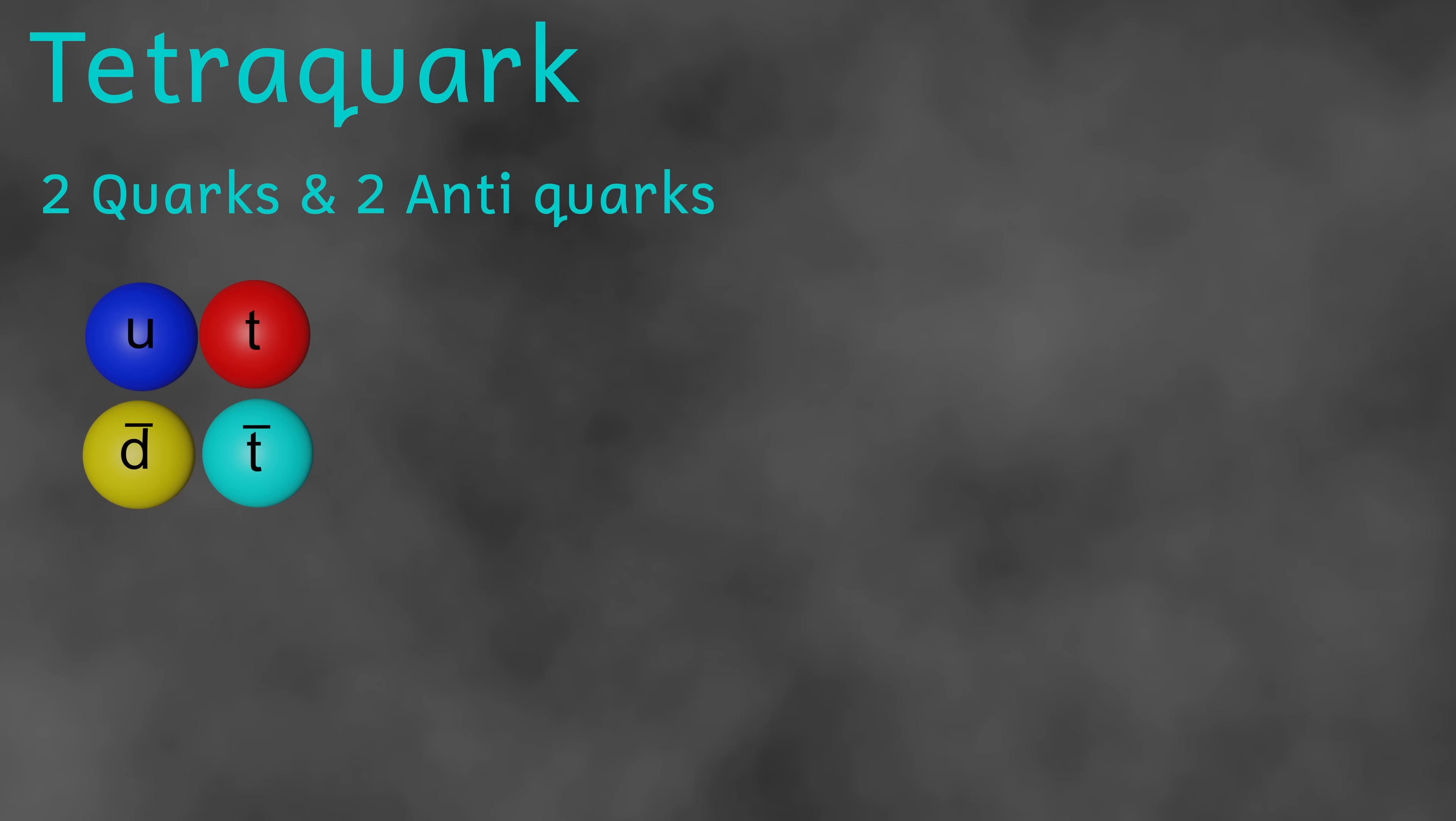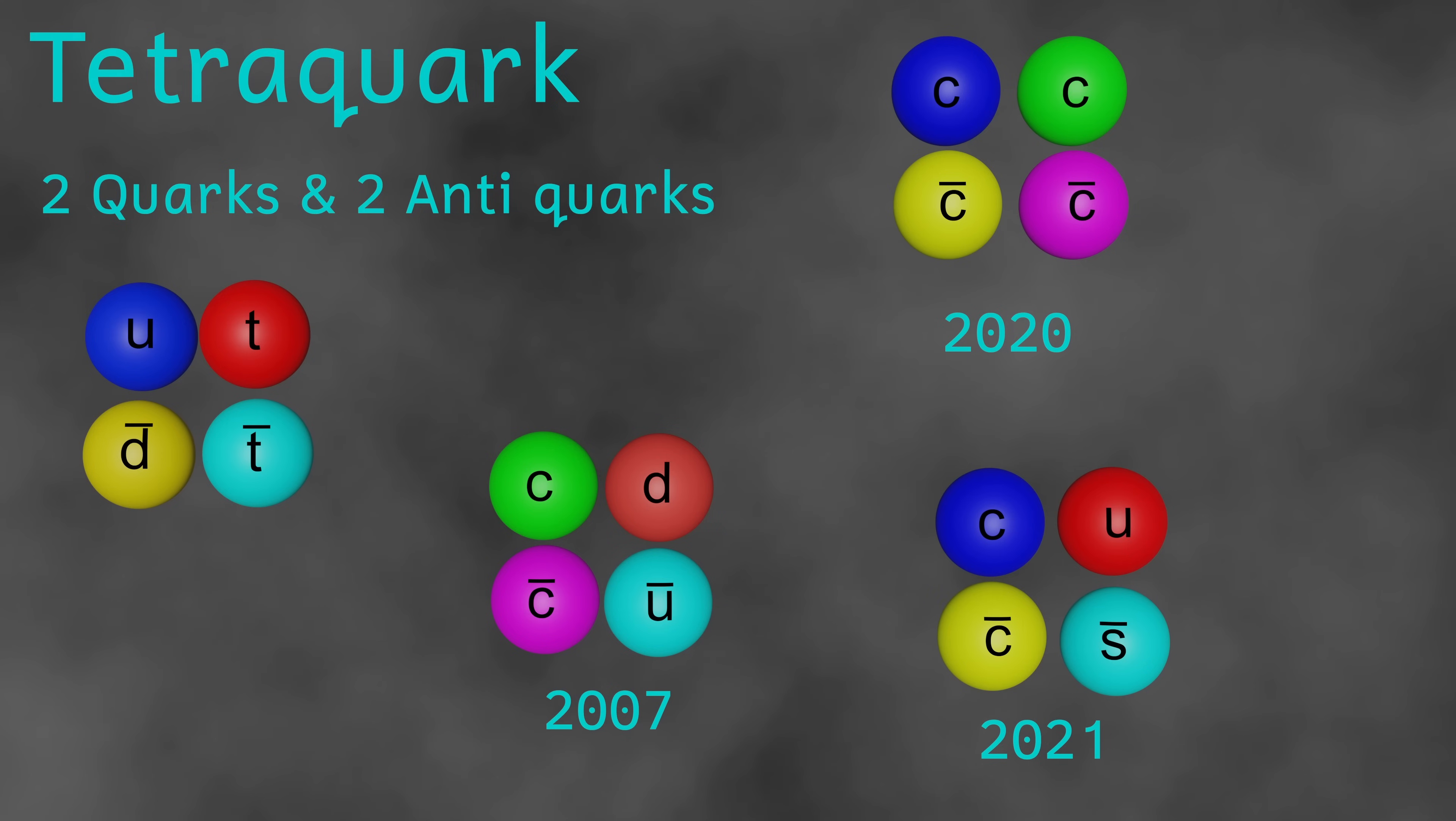We've actually found several tetraquarks. For instance, in 2007, the Bell experiment in Japan reported charm-anti-charm-down-anti-up tetraquarks. Since then, a number of others have been discovered, including a charm-charm-anti-charm-anti-charm tetraquark, discovered in 2020 at CERN, and a charm-anti-charm-up-anti-strange tetraquark, also discovered at CERN in 2021.